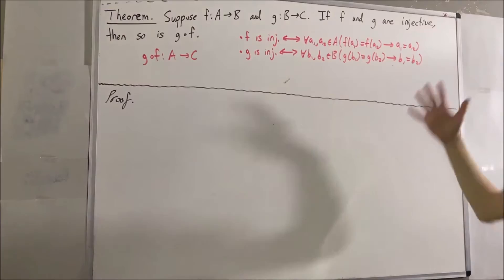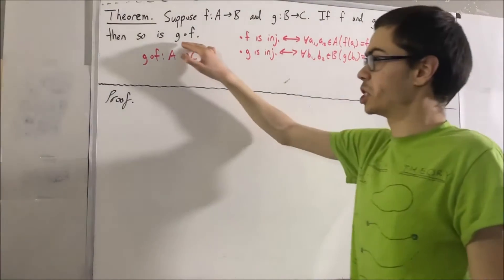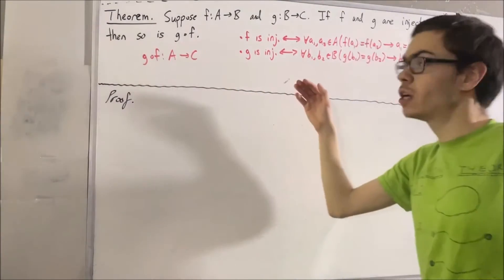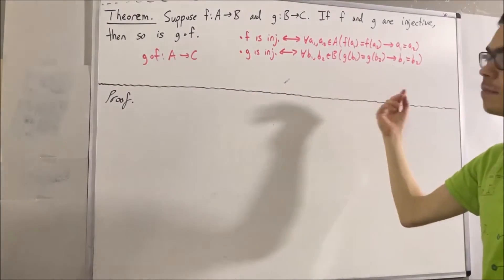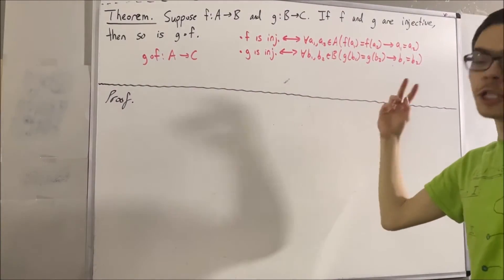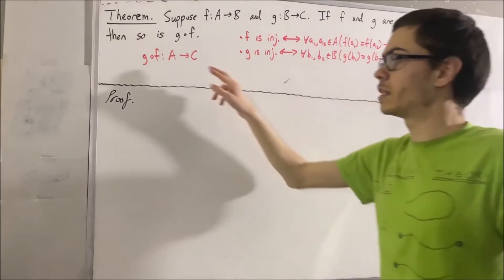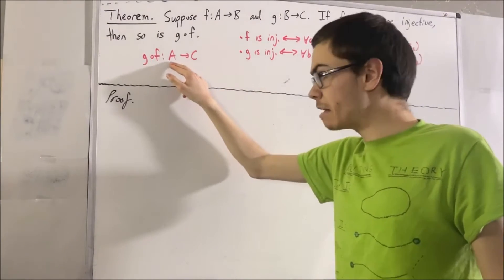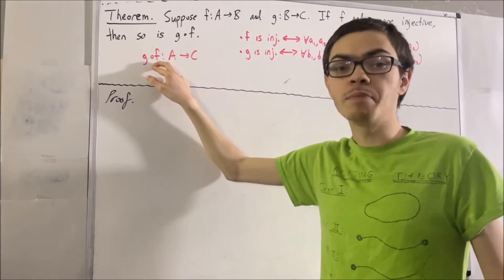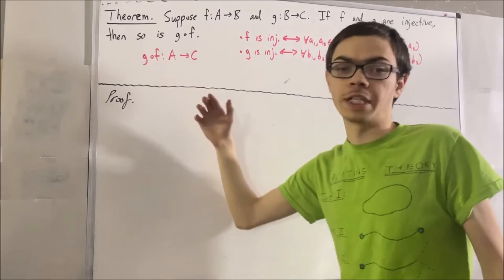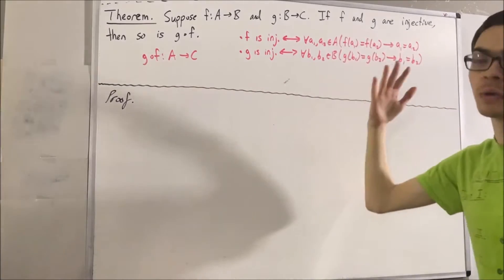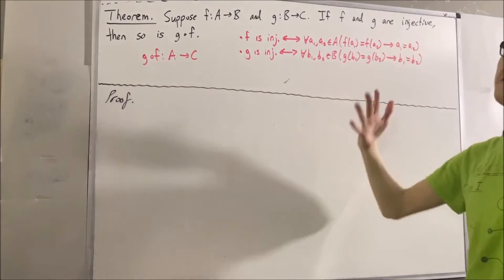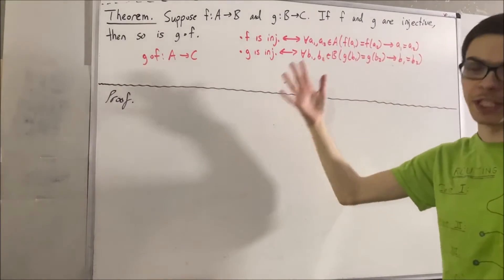Lastly, what does it mean for g compose f to be injective? It means that for every two elements a1 and a2 in A, if g compose f of a1 equals g compose f of a2, then a1 equals a2.